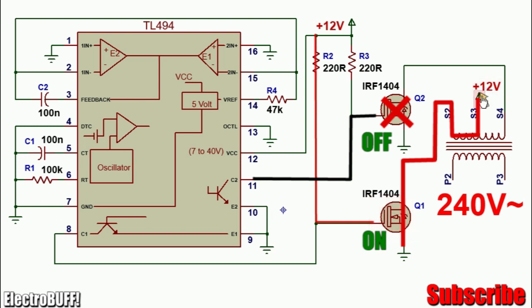Current will now flow from the 12 volts through the winding S3 S2 through the MOSFET Q1 and to ground, making the first half cycle.